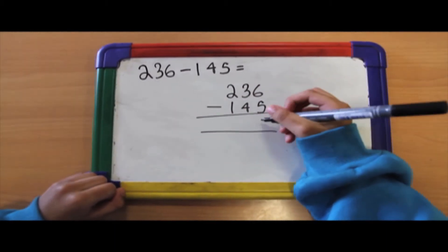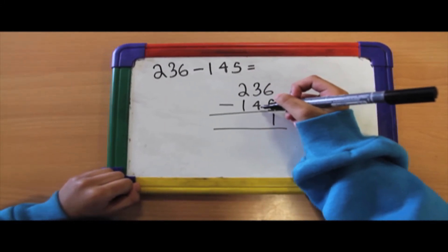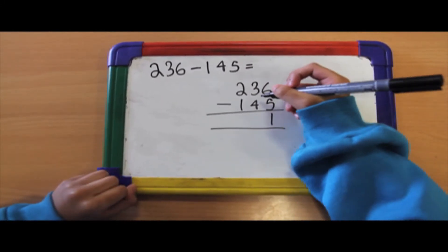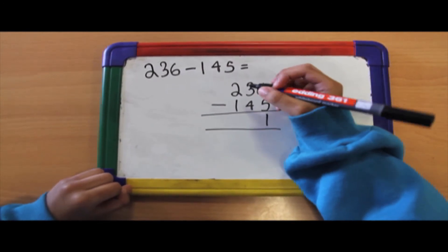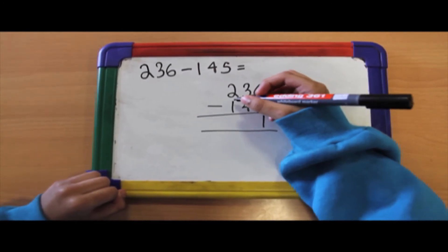6 take away 5 equals 1. 3 take away 4. But we can't do that. So we are going to exchange 1 hundredths for 10 tens.